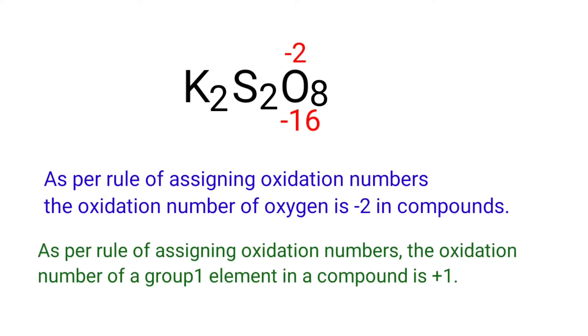As per rule of assigning oxidation numbers, the oxidation number of a group 1 element in a compound is plus 1. Potassium is a group 1 element, so we can write the oxidation number of potassium is plus 1.